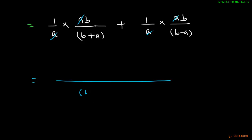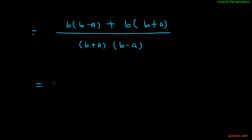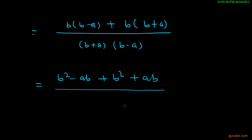The LCM will be b plus a into b minus a. If we divide b plus a into b minus a by b plus a, we remain with b minus a. Then it will be b into b minus a, and here b into b plus a. Finally it will be b squared minus ab, and b squared plus ab in the numerator.